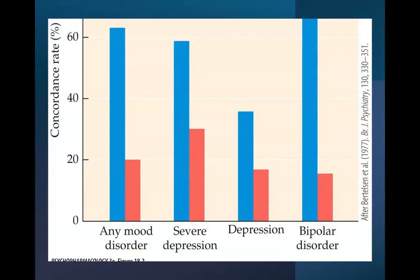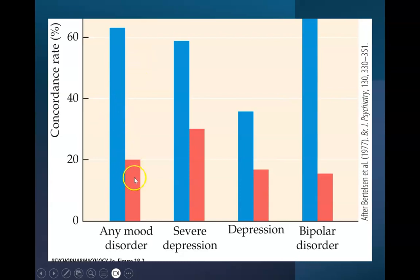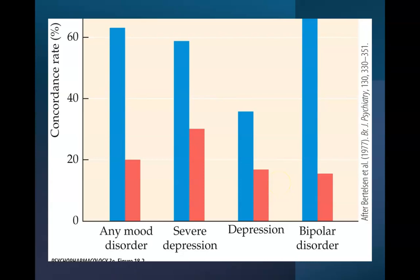Looking at the concordance rate chart comparing identical versus fraternal twins: for any mood disorder, it's about just over 60% for identical twins versus about 20% for fraternal twins. For severe depression, it's less than 60% for identical twins and closer to 30% for fraternal twins. For regular, non-severe depression, the concordance rate drops further — really indicating that yes, genetics play a role, but environment seems to matter as well.